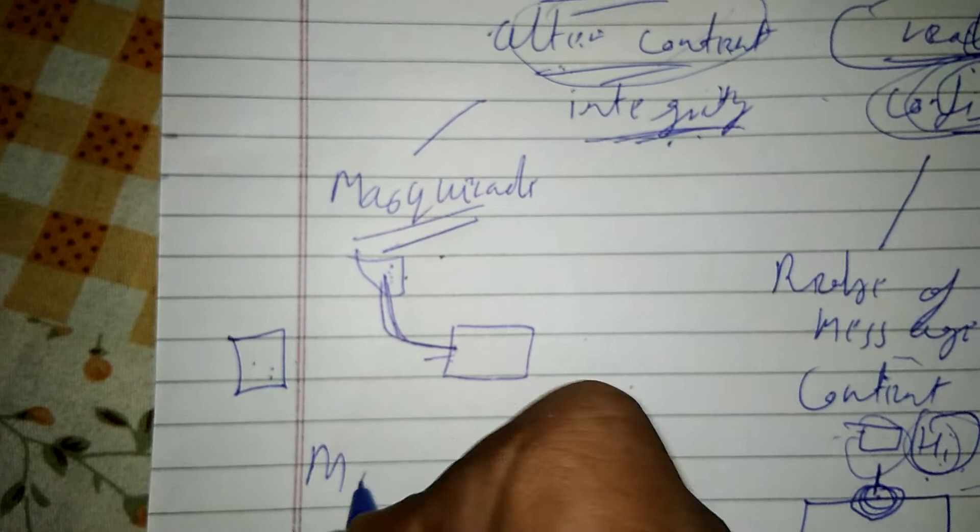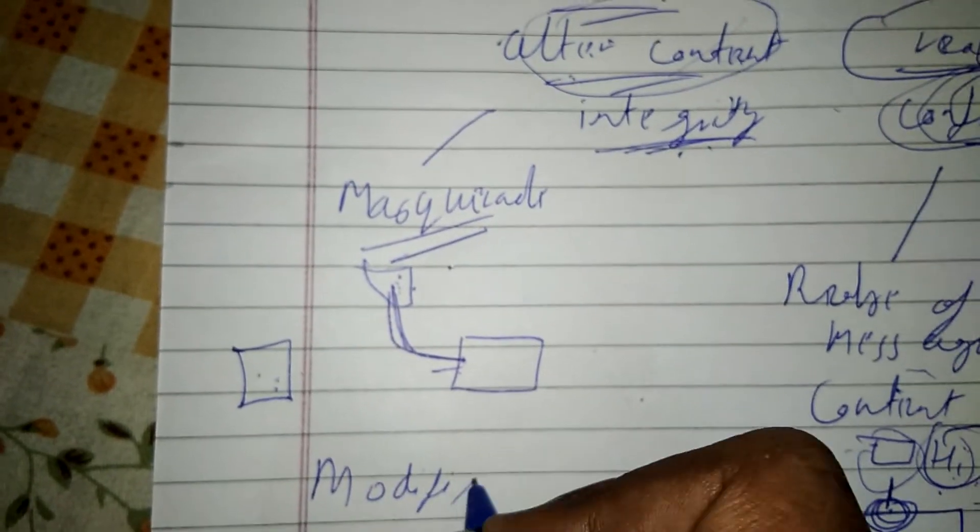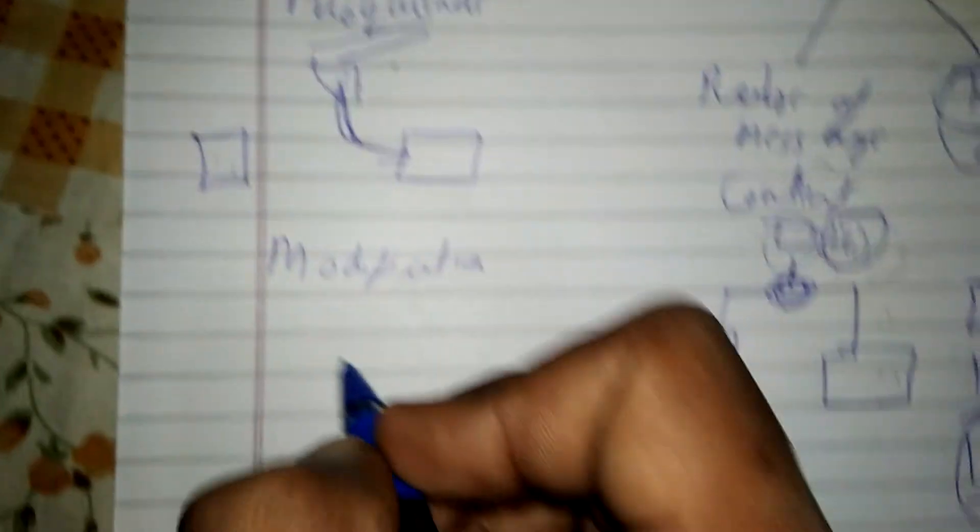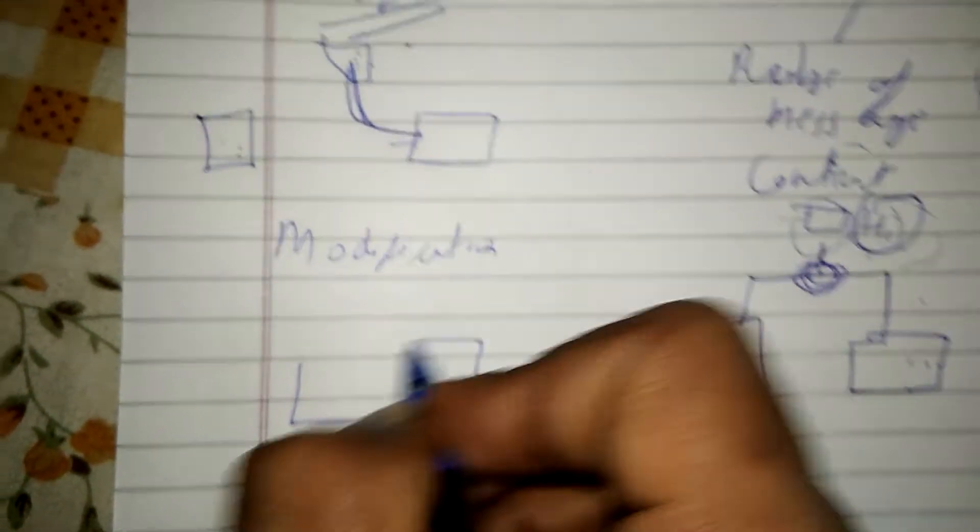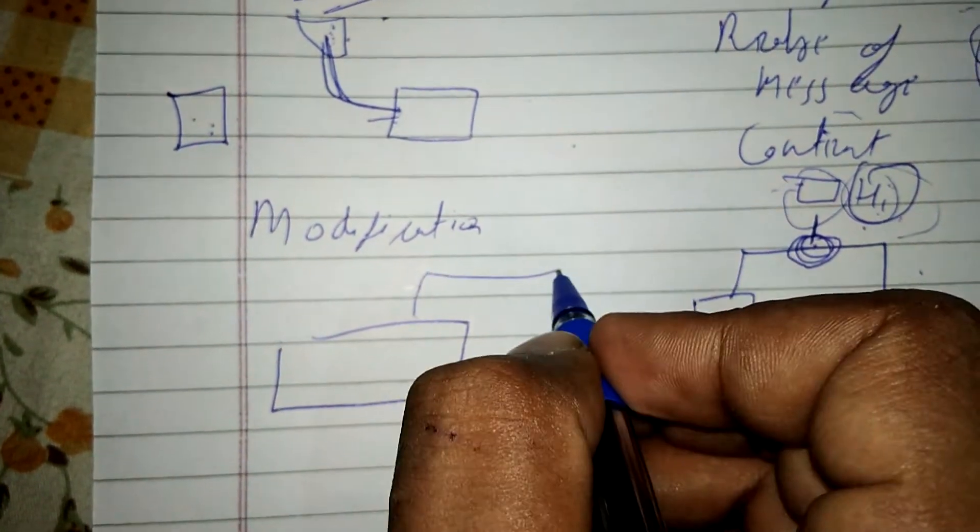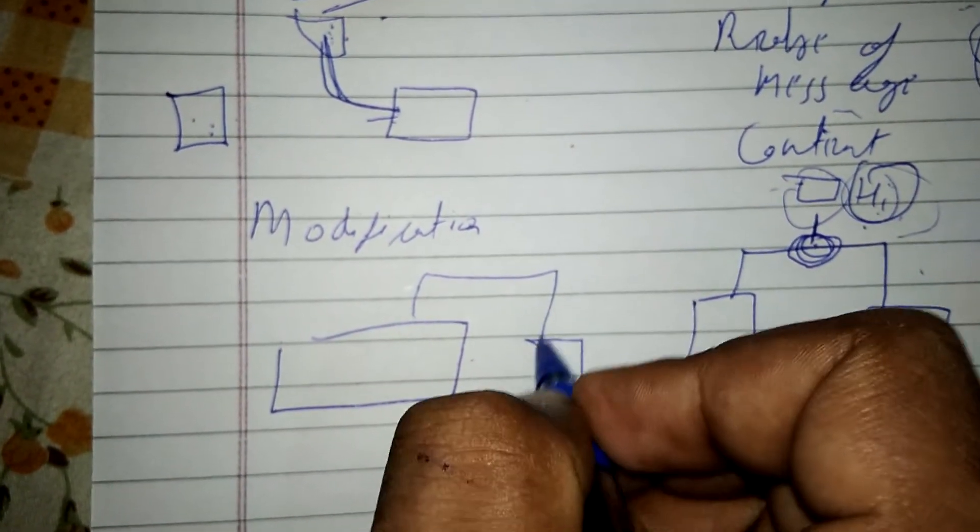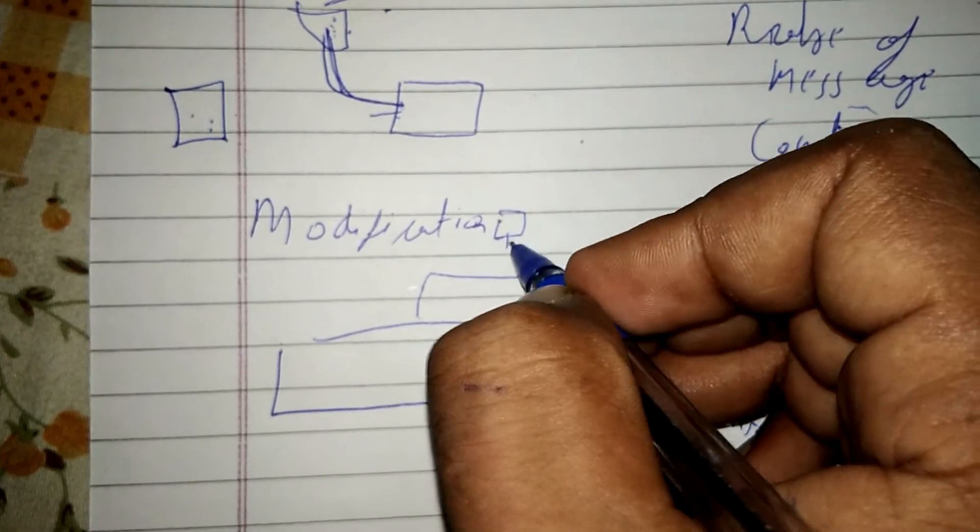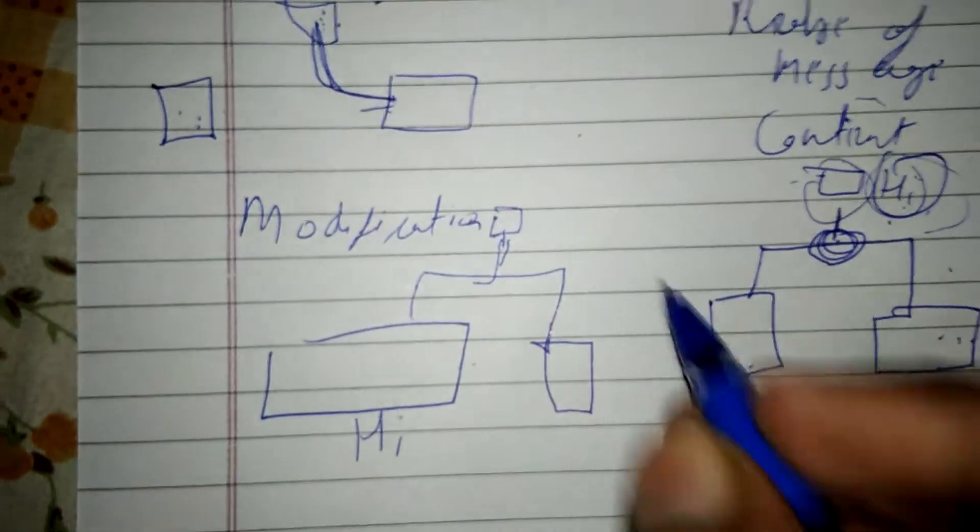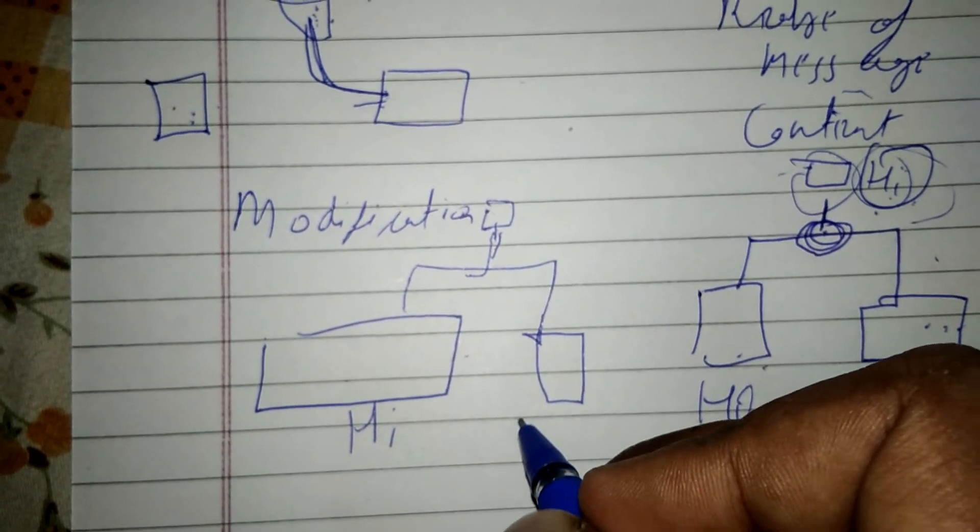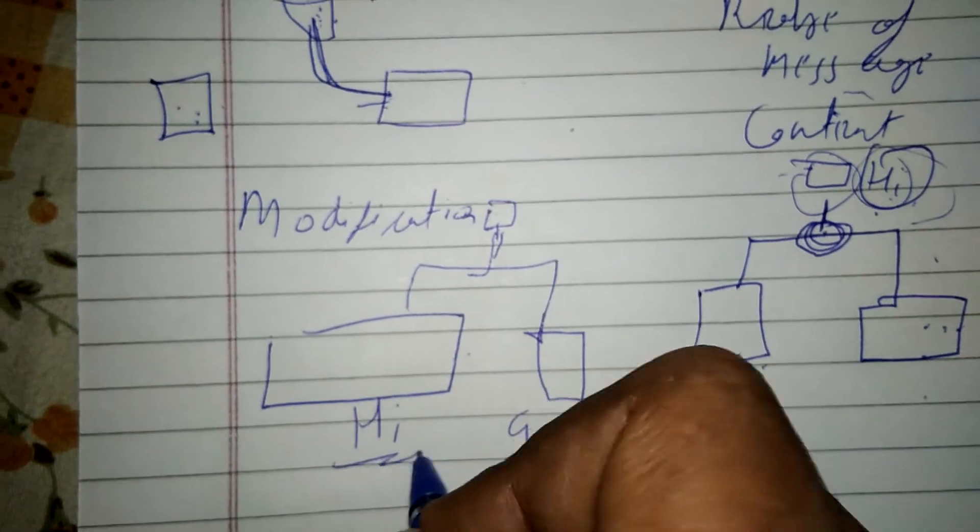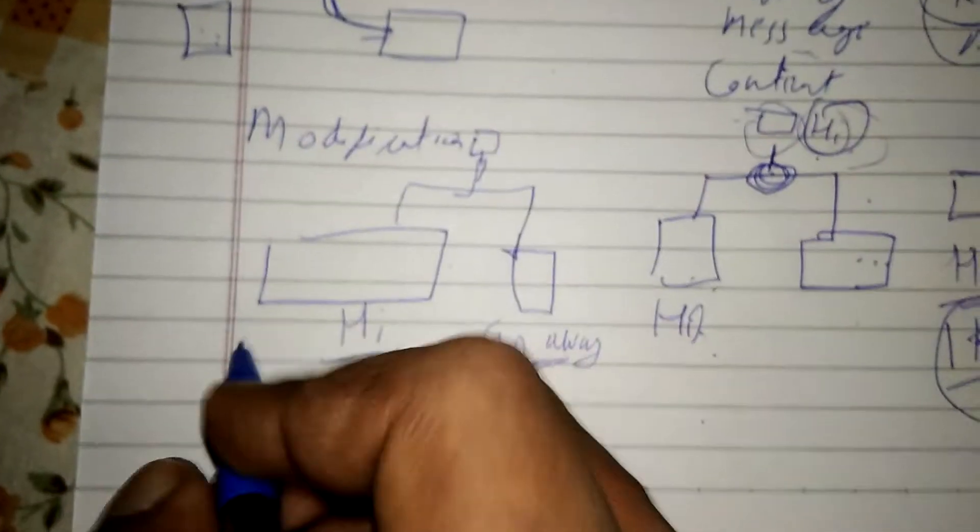The second is modification. Modification means changing the message. The sender sends a message to the receiver, but somebody sitting in between tries to modify it. For example, the sender sends 'Hi' but the receiver gets 'Go away'. The attacker changes the content of the message.